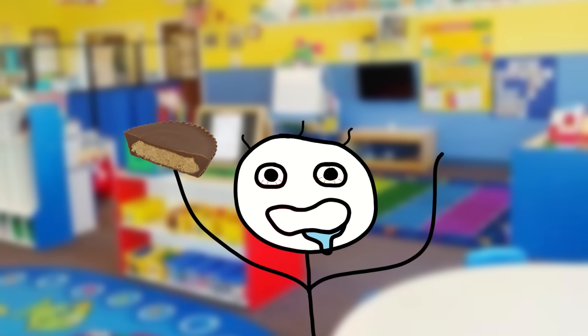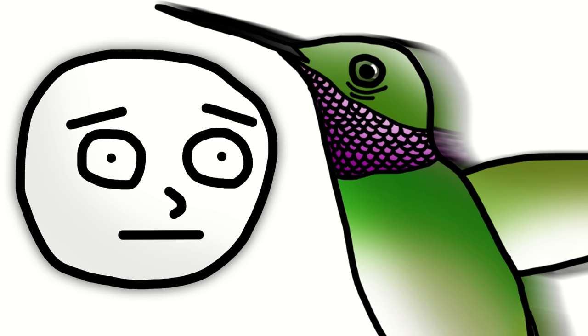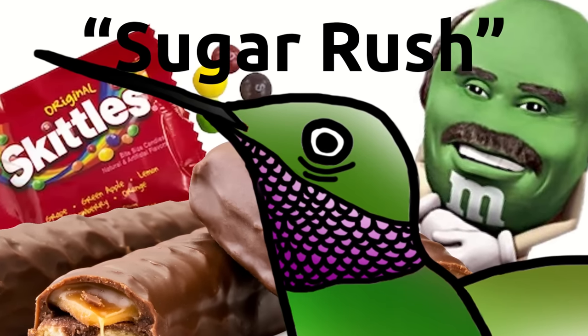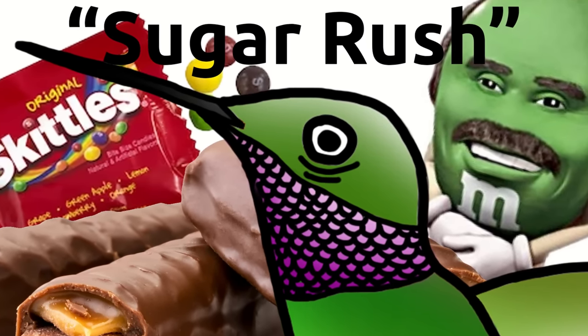If you've ever dealt with a 3-year-old after a single Reese's cup, you probably understand why the hummingbird is the way it is. This 3-inch Adderall prescribed bird suffers from a rare condition called the sugar rush, meaning it's in a perpetual state of hyperactivity.